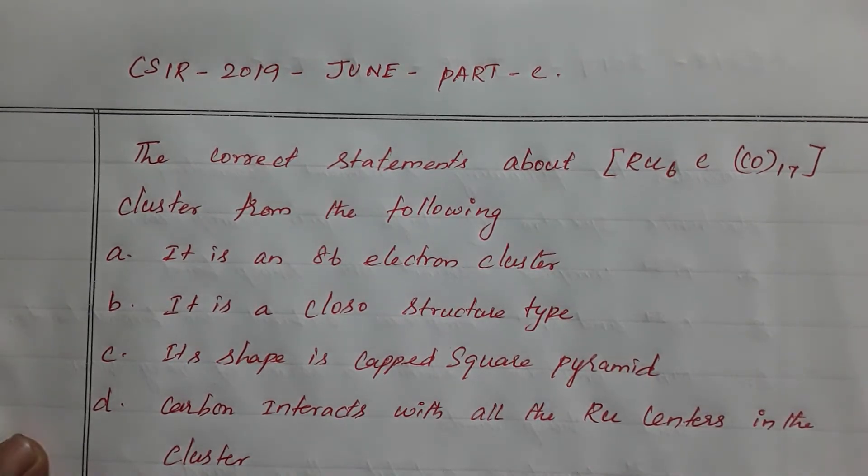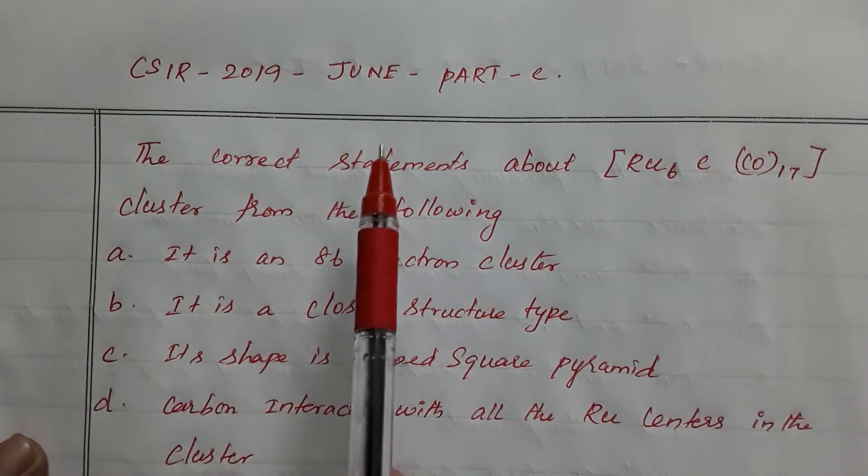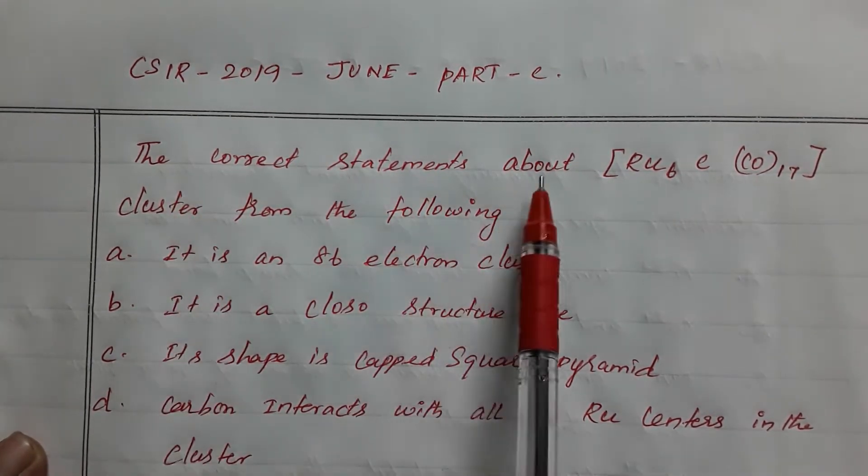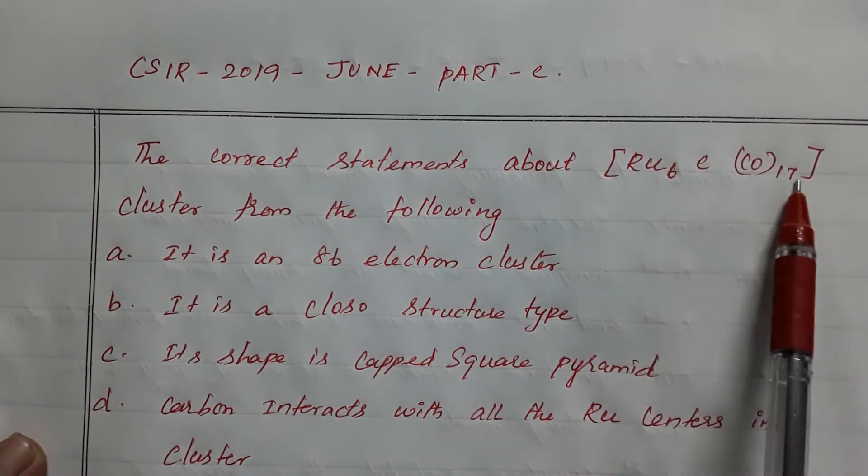Now we are going to see CSIR 2019 June Question Paper Part C. The correct statement about ruthenium complex Ru6C(CO)17.